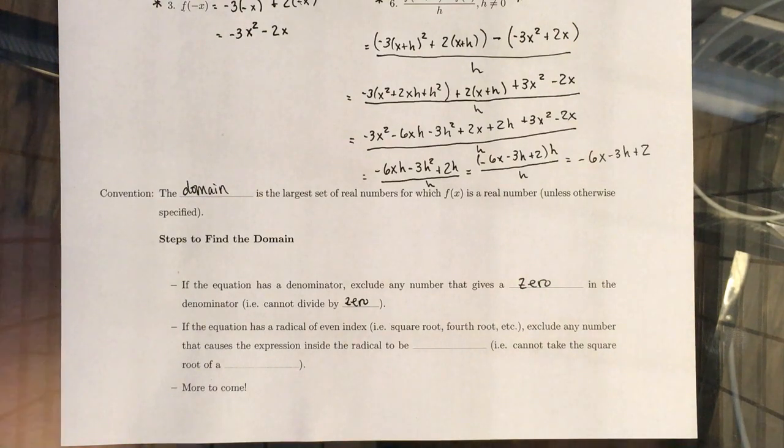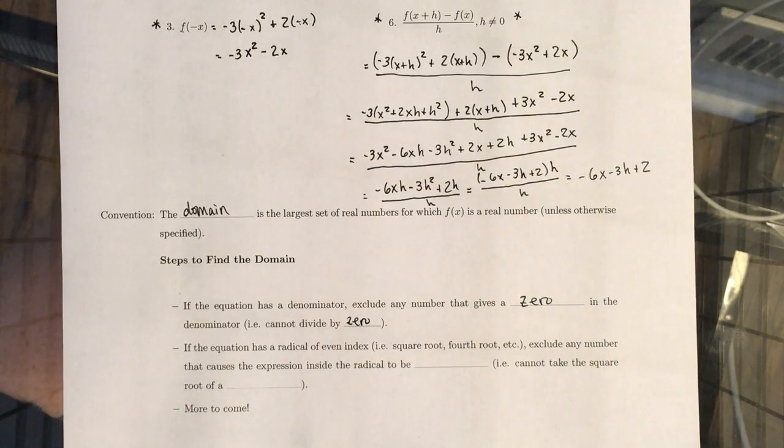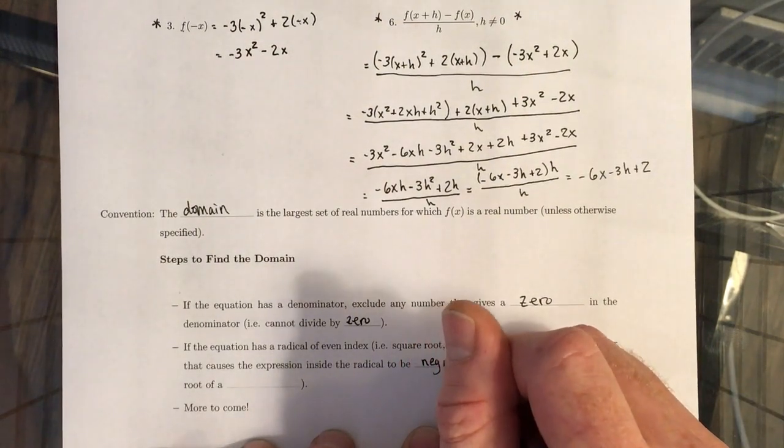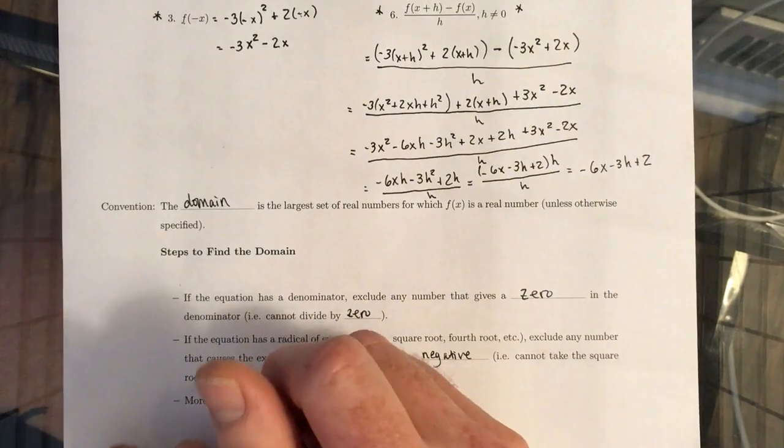Second, if the equation has a radical of even index. So if you're looking at a square root, a fourth root, a sixth root, anything where it's a root that has an even number, we need to exclude any numbers that causes the expression inside the radical to be negative, right? We cannot take the square root of a negative number.